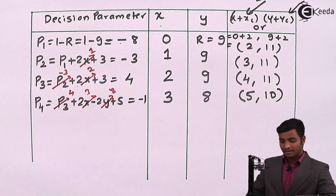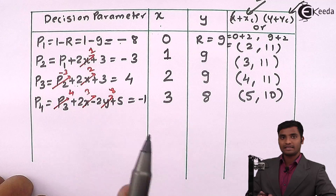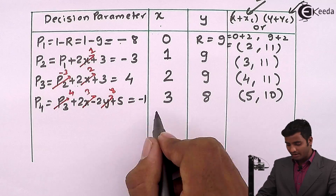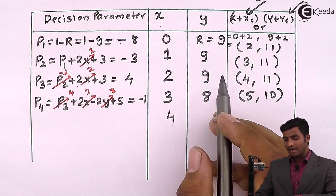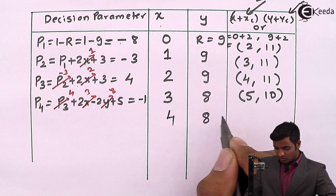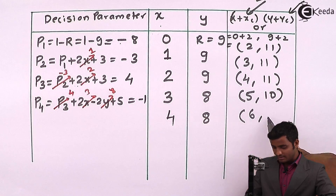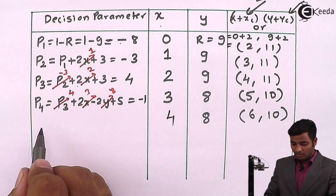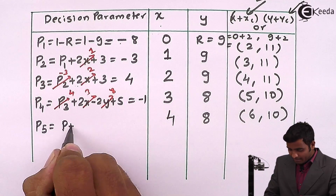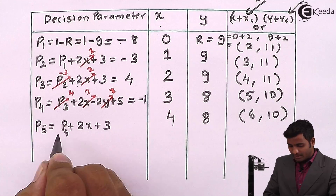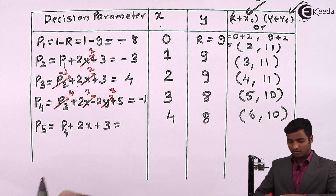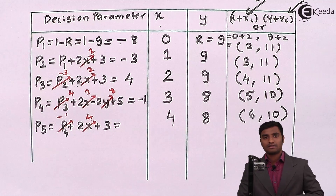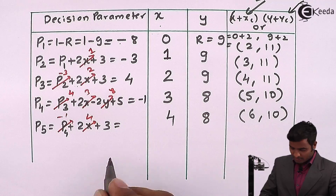The decision parameter P4 = -1, which is less than 0 again. When P is less than 0, X is incremented by 1, becoming 4, and Y remains 8, giving coordinate (6, 10). P5 = P4 + 2X + 3 = -1 + 2(4) + 3 = 10.